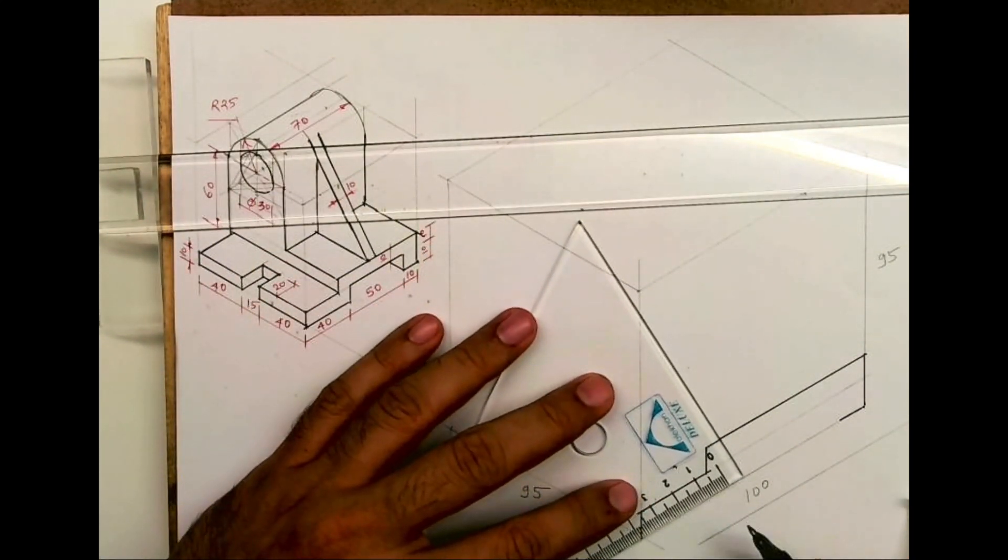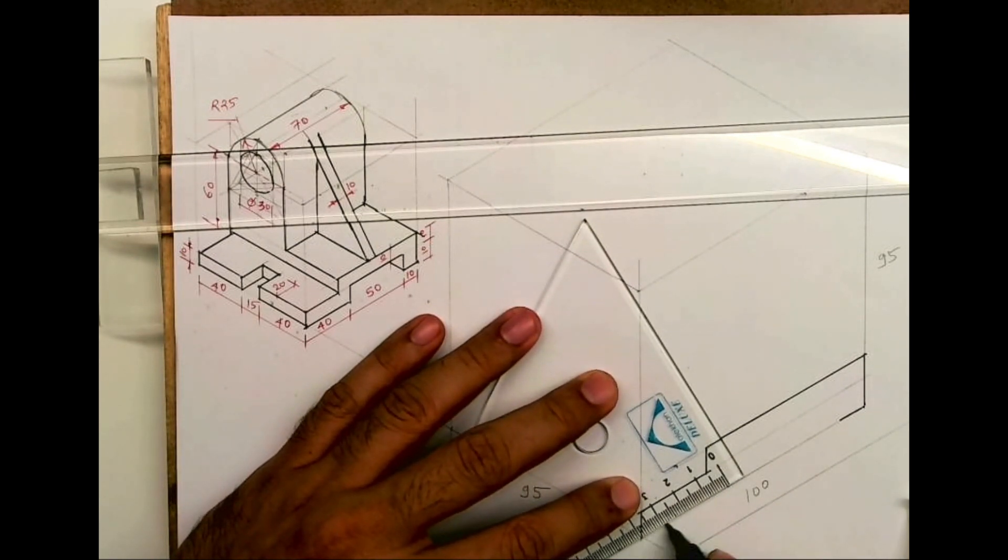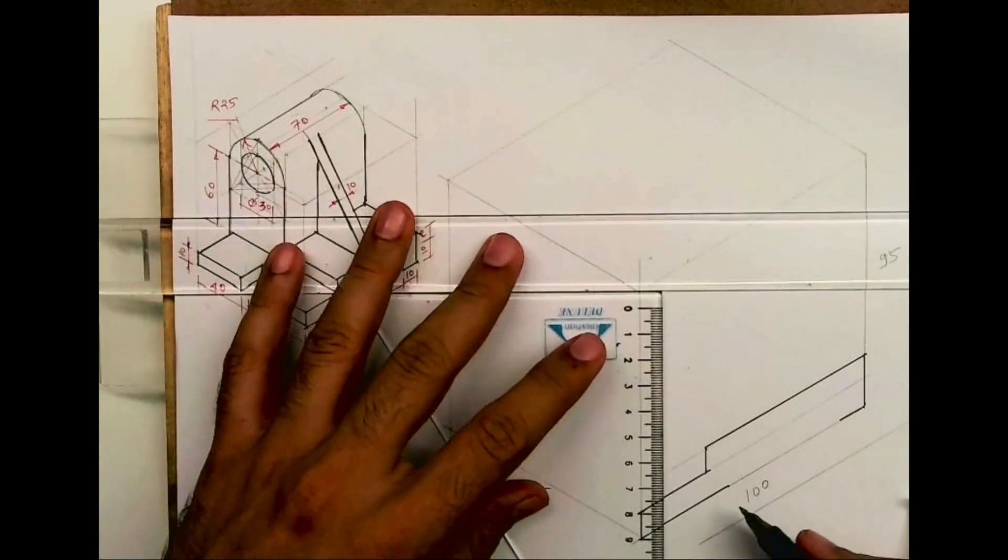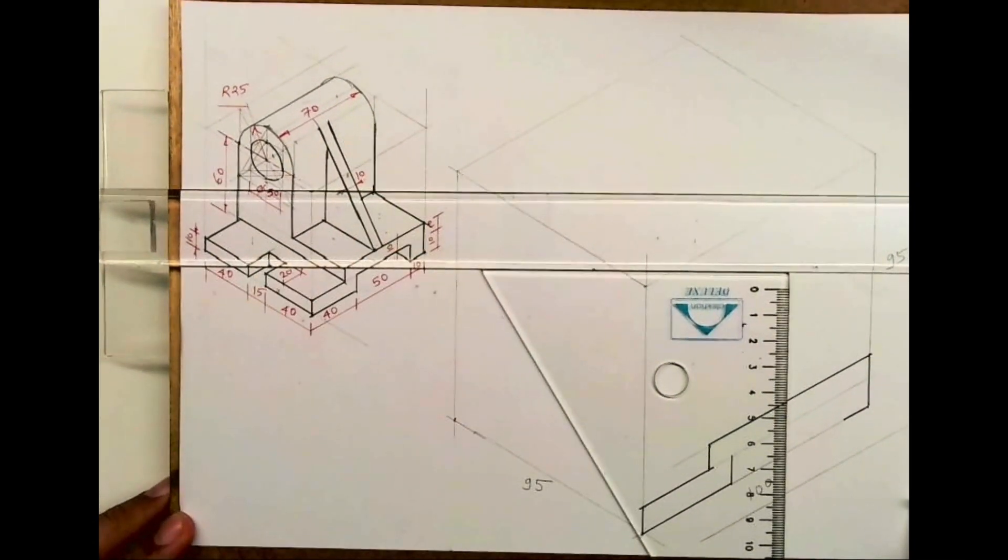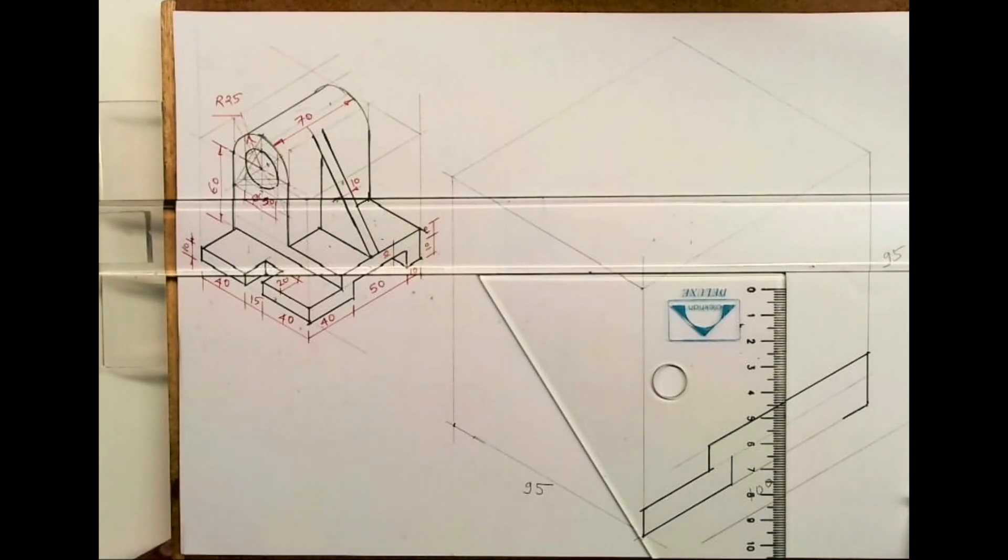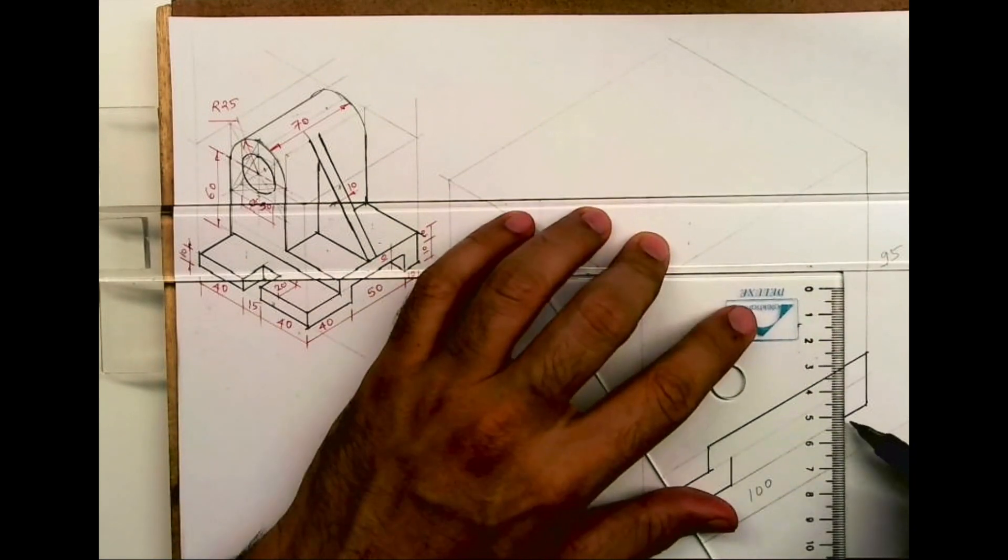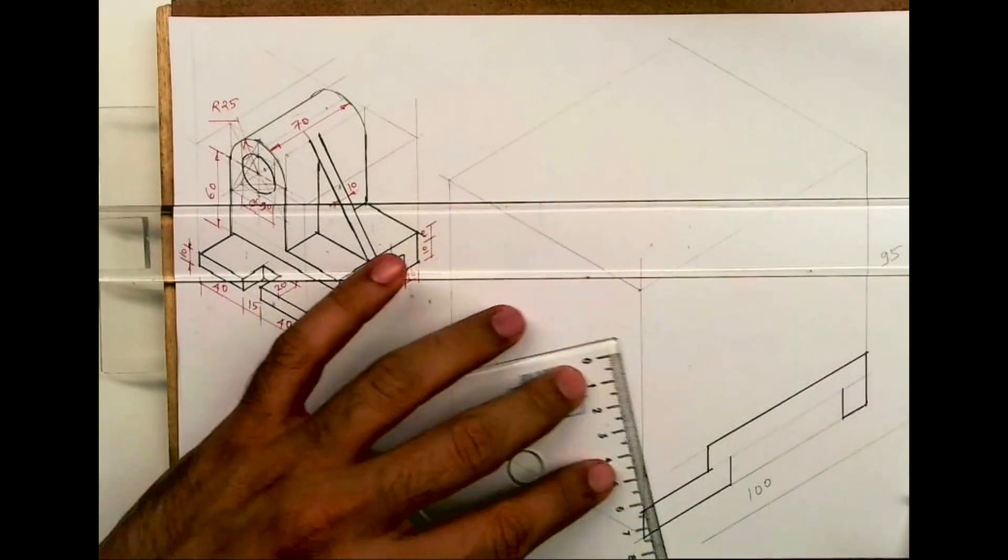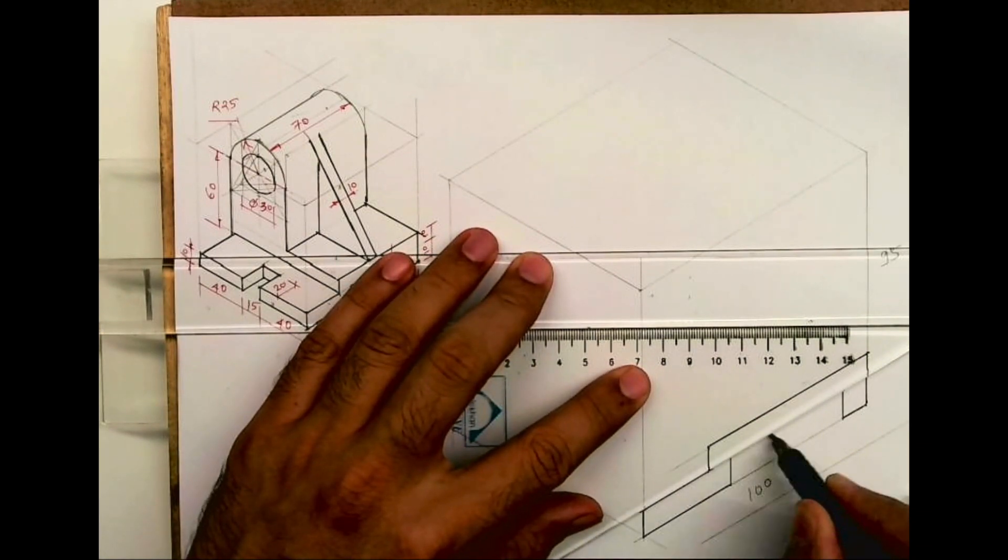Then from here you take 40. Then you draw vertical line. Here also you draw vertical line and you'll get this part.